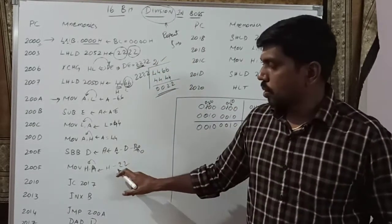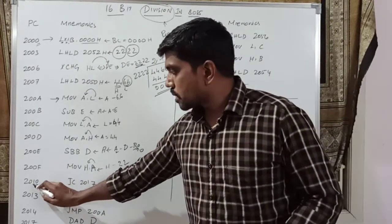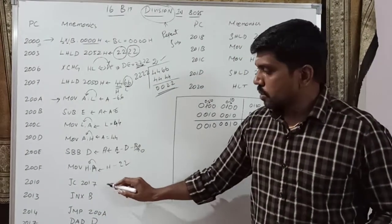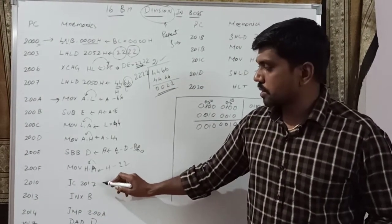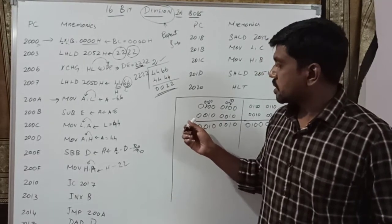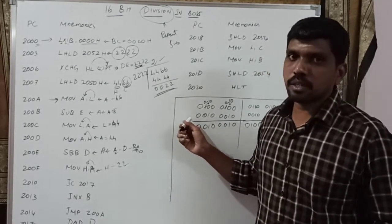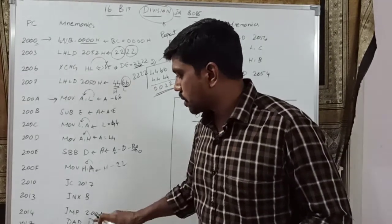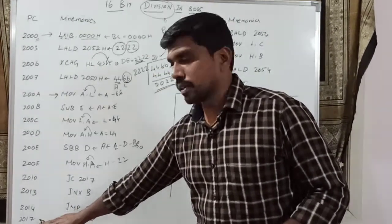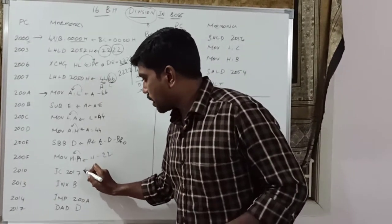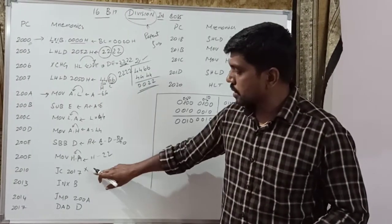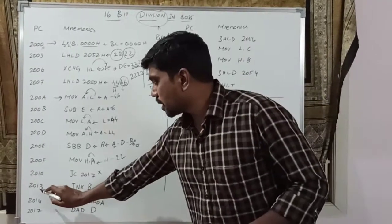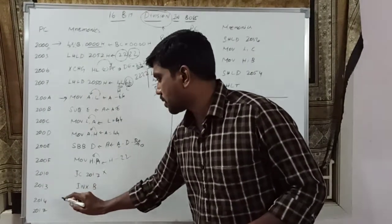So 22H is the output. The next instruction at 2010H is JC 2017H. Here you check the condition: in this subtraction, is there any carry produced or no carry? Whether the condition is true, it goes to memory location 2017H. In this case, the condition is false — so just ignore the instruction and execute the next instruction at 2013H.